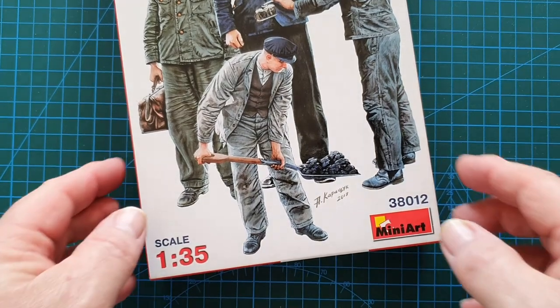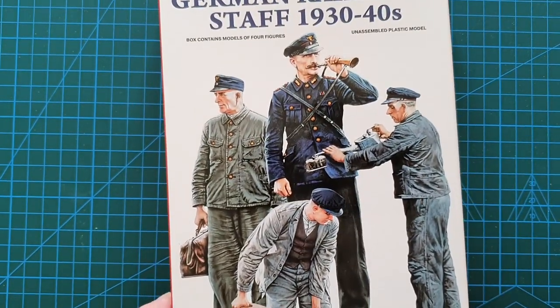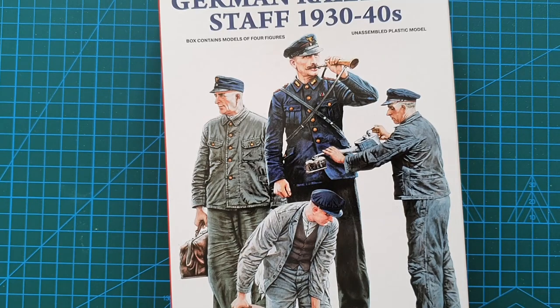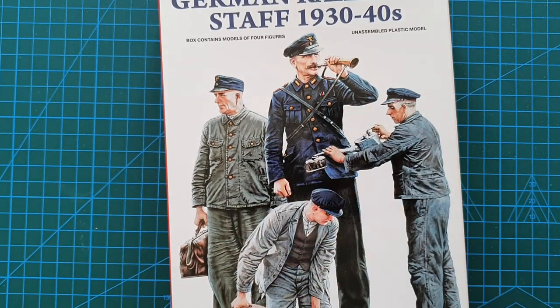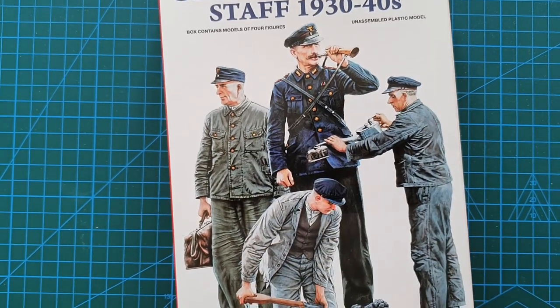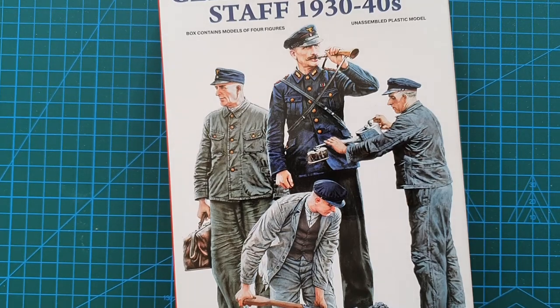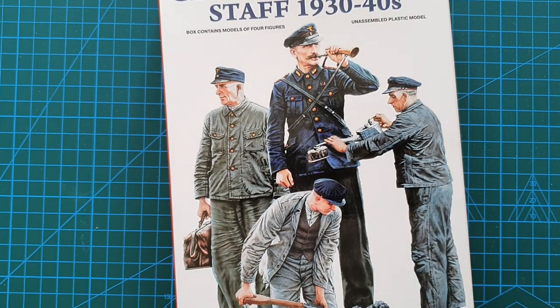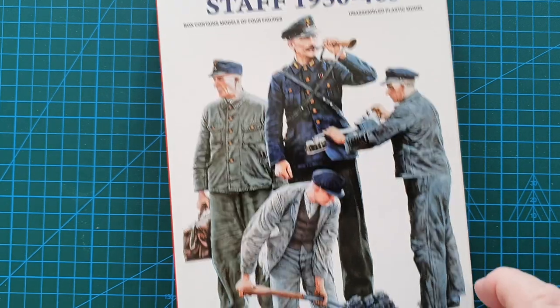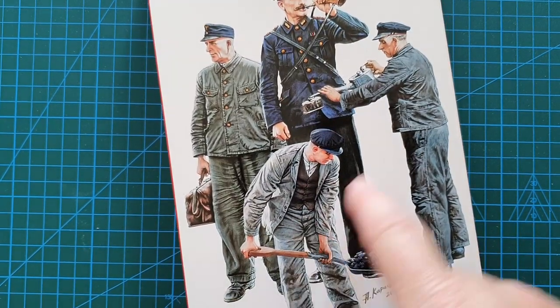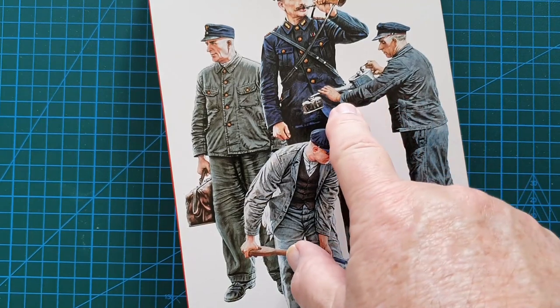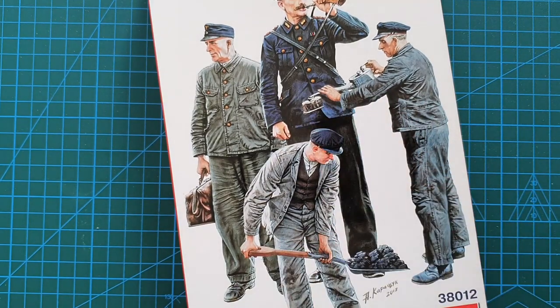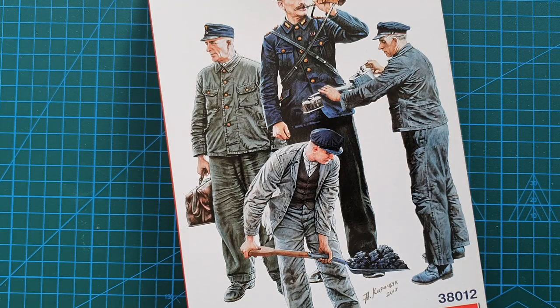This is purely a figure kit with only these four figures. These figures are railroad staff, primarily for steam engines. As you can see, you have the stoker, this gentleman here is obviously oiling probably one of the main bearings or drive shafts on a steam engine.